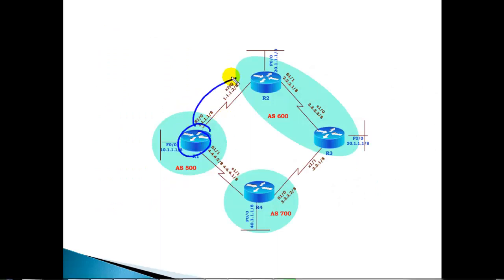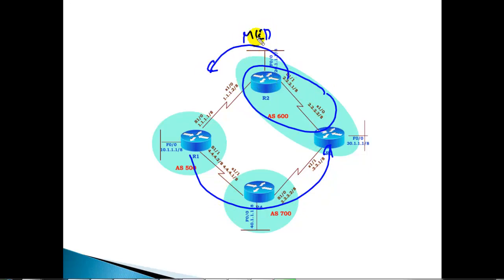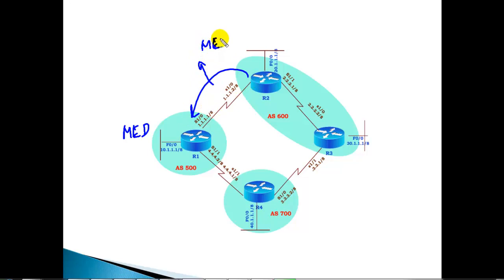In our next video, we'll get into more detail with a practical scenario. We'll configure weight on one side so it prefers a specific path, ensure traffic exits via that side, and also do some MED path manipulation and verification practically. This will be our lab scenario where we use the MED attribute to ensure all traffic entering our autonomous system is calculated based on MED.